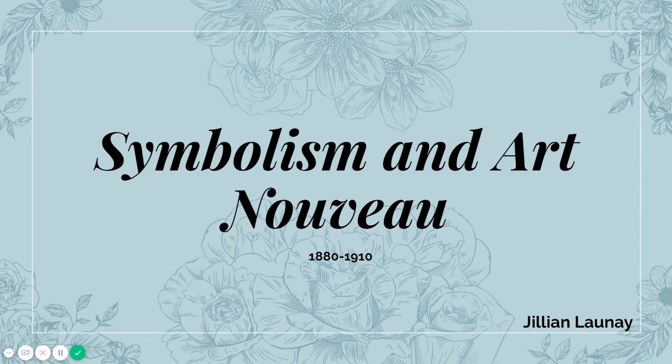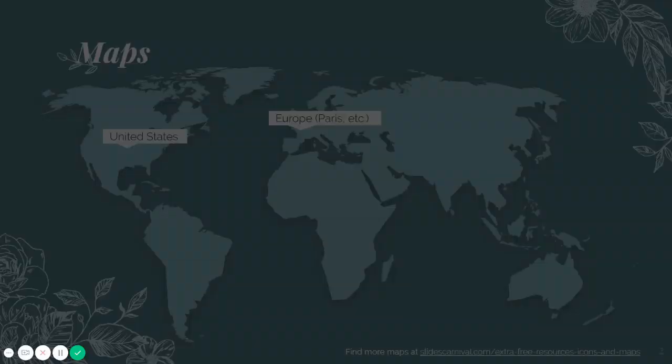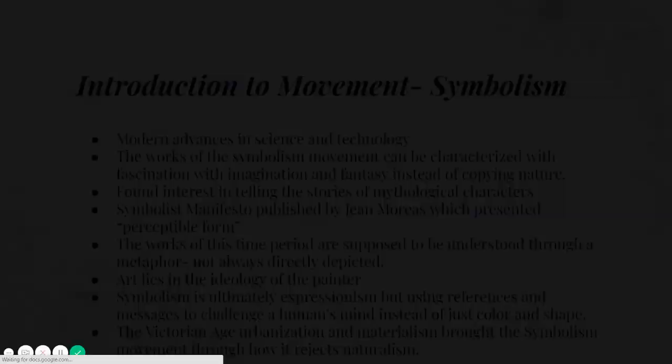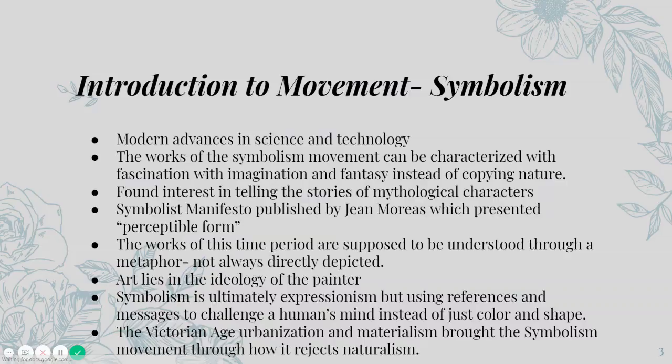Moving forward, we're going to talk about two movements in this presentation because they each only have one image associated with them. We're going to be talking about Symbolism and then the movement of Art Nouveau. This presentation was put together by Jillian Linnae, and I'll be narrating it.